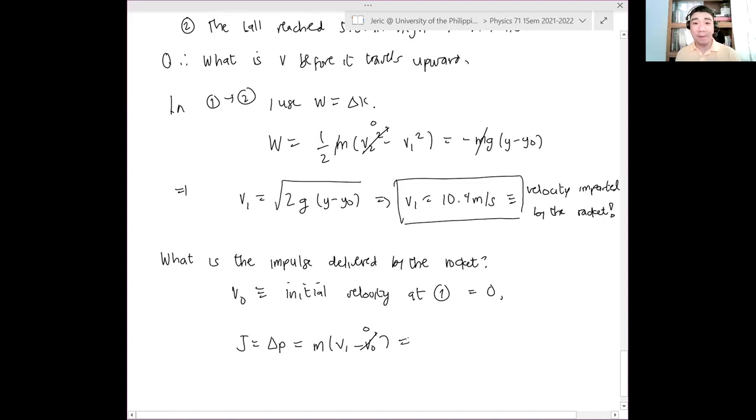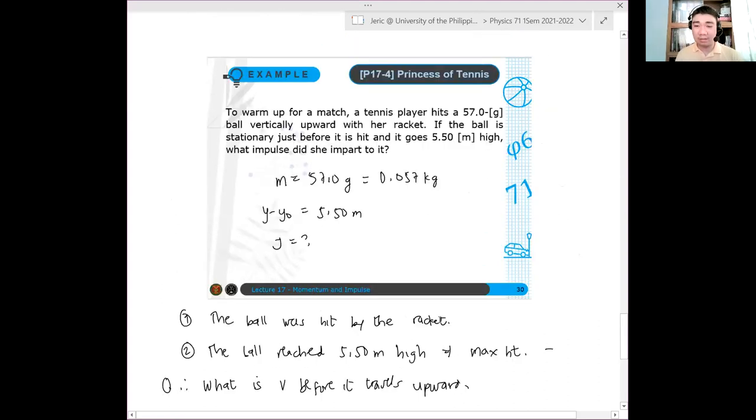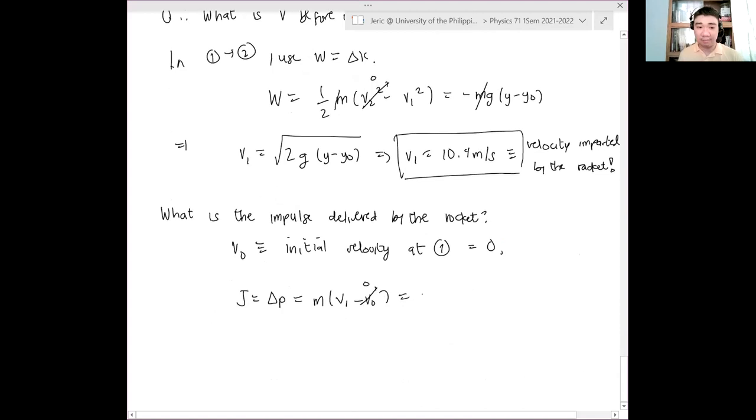this is just the momentum of the ball after it is hit by the racket. And therefore, this is simply the mass of the ball, 0.057 kilograms, times 10.4 meters per second. And the answer to that, please verify, J is about 0.590 newton seconds. That is the answer.